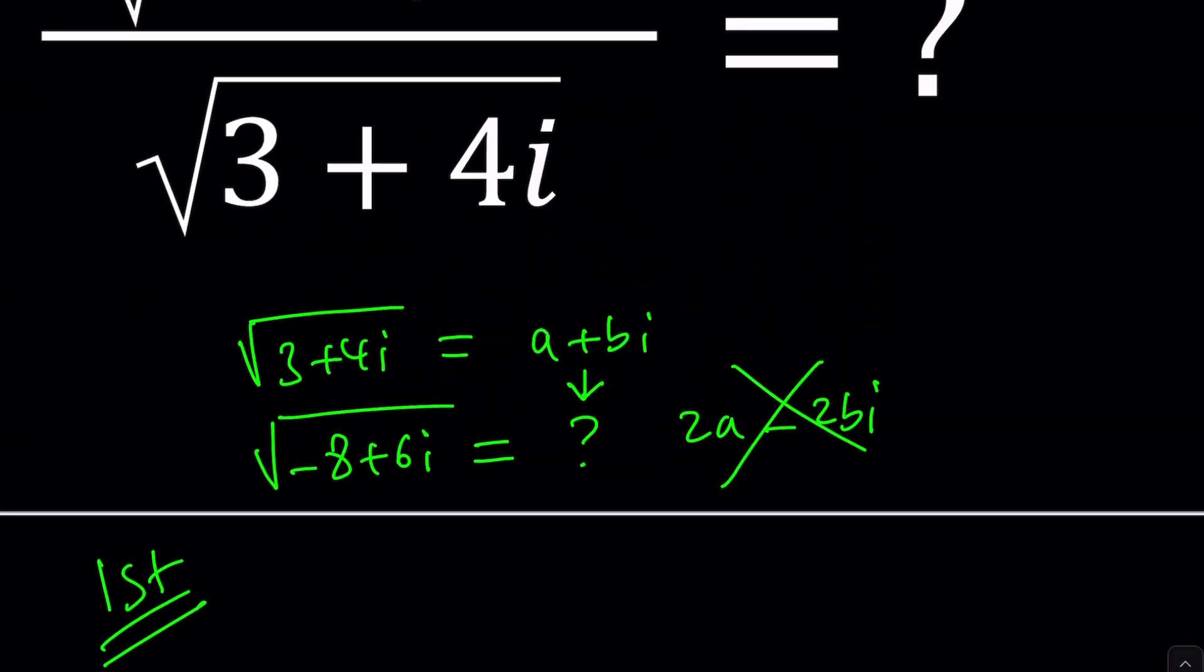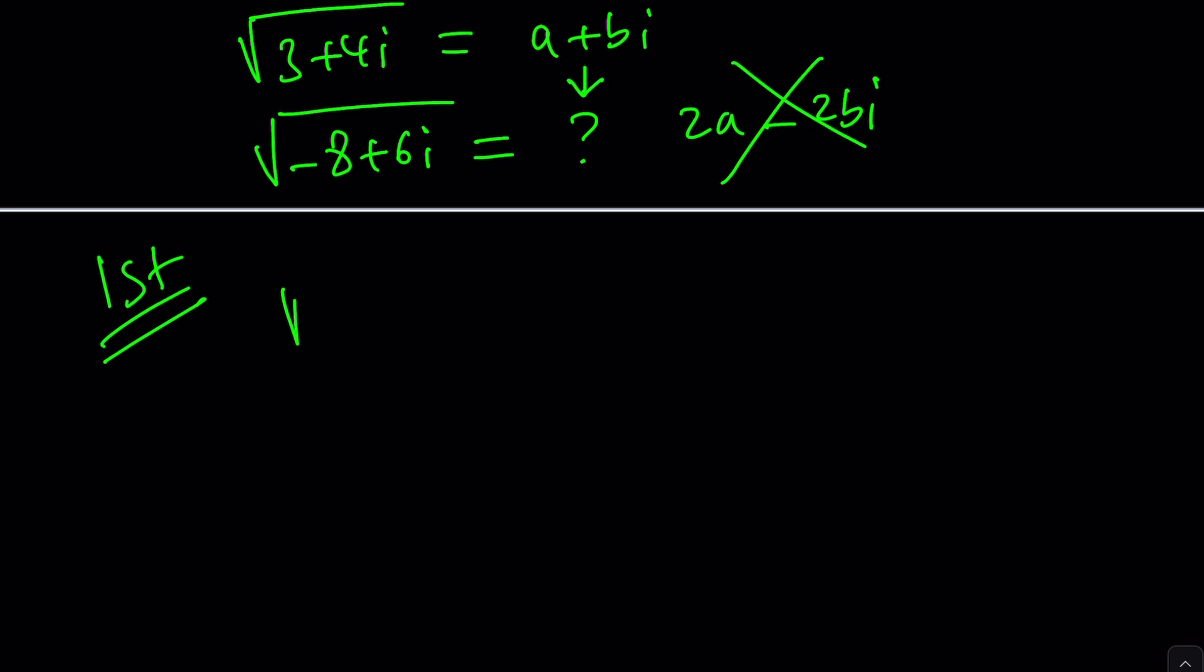So we're going to be dividing a radical by another radical. So I might as well just find the square root of these numbers. Wait, how do you find the square root of negative 8 plus 6i? I can set it to a plus bi, but we already did for this one. Fine, I can do x plus yi. Let's do it.